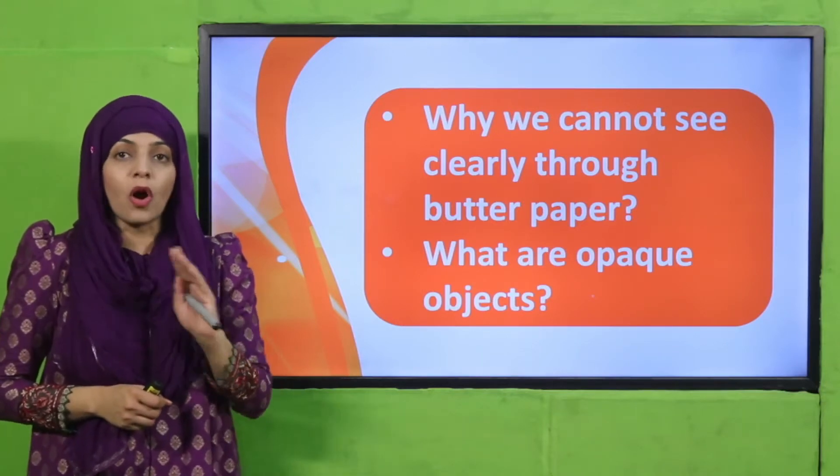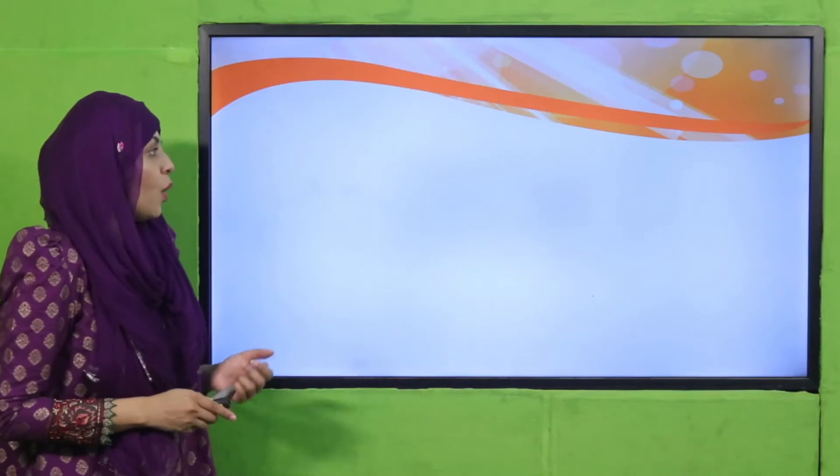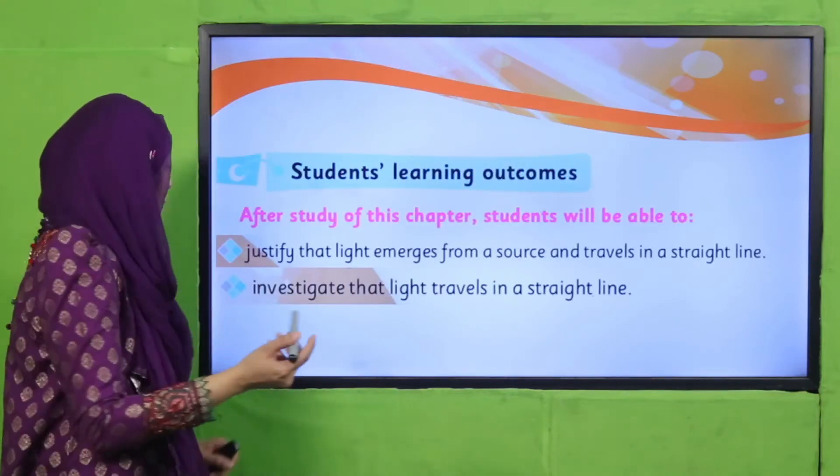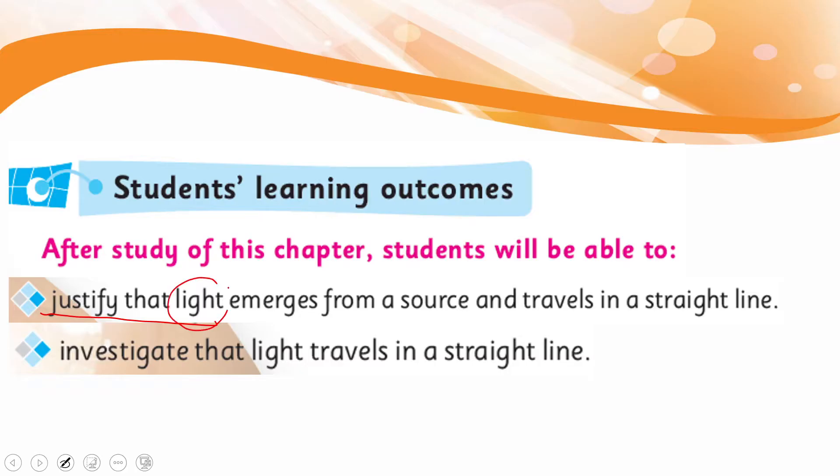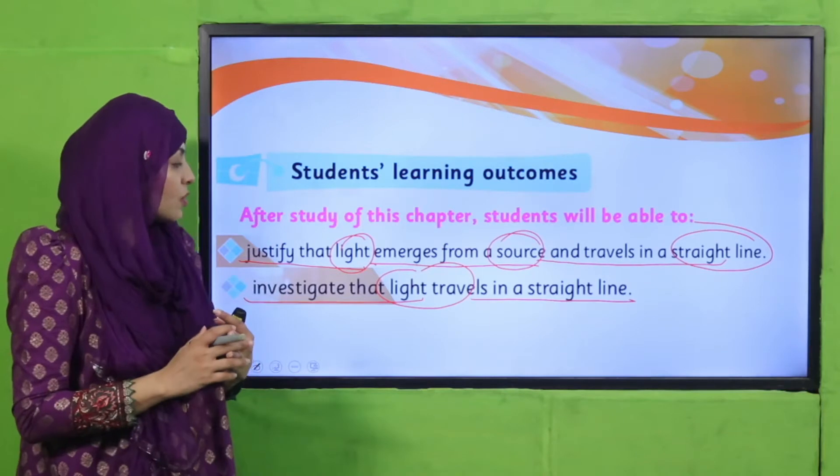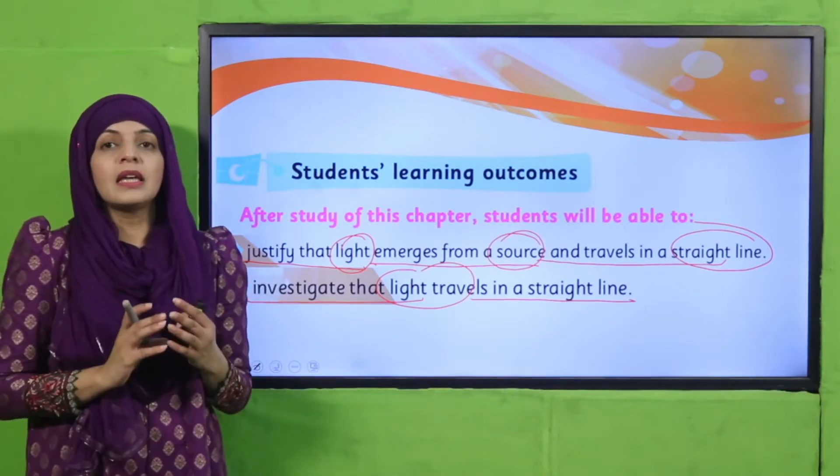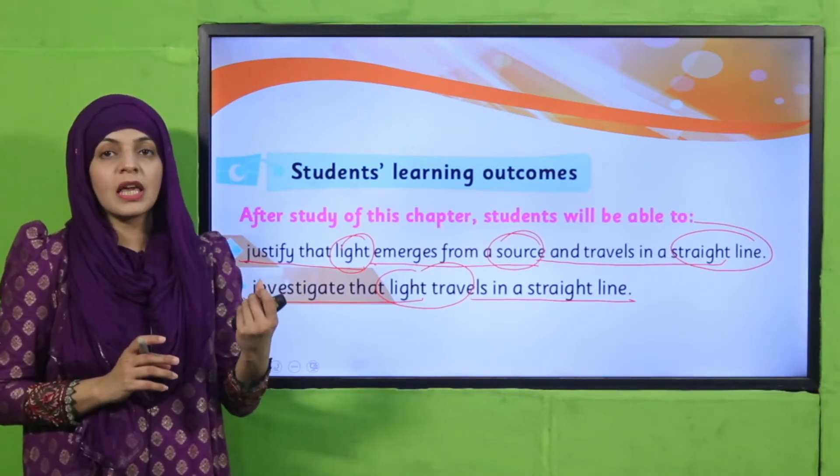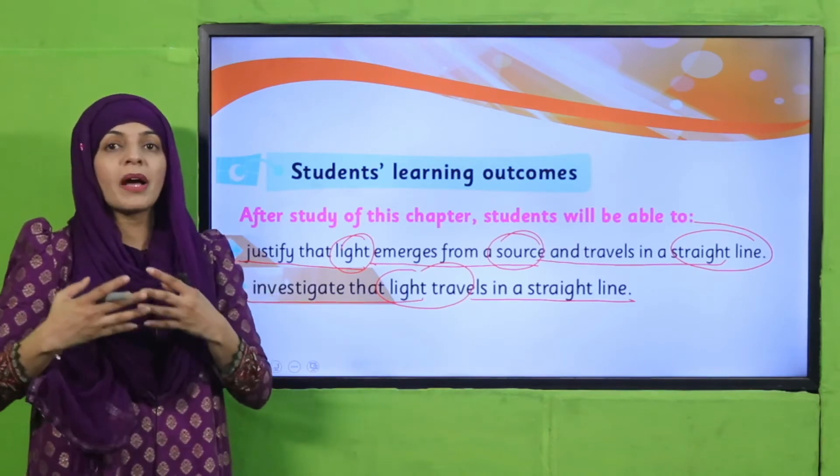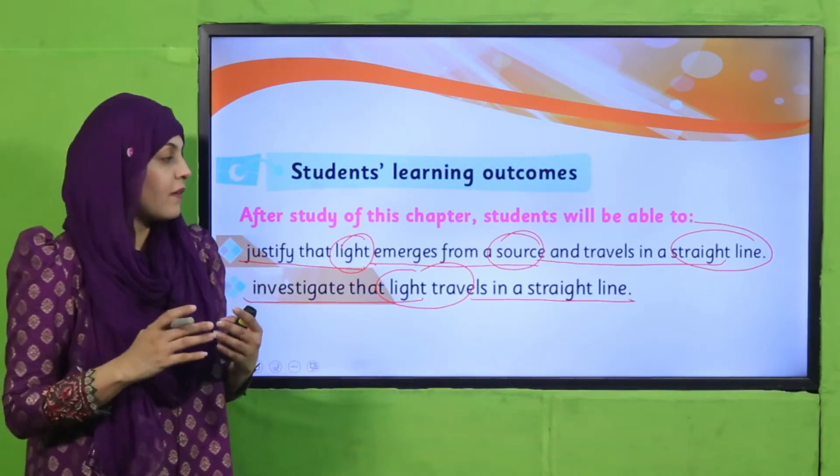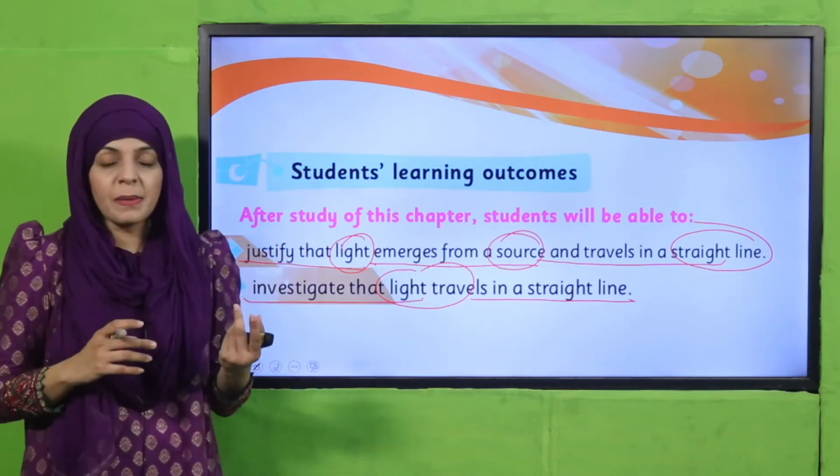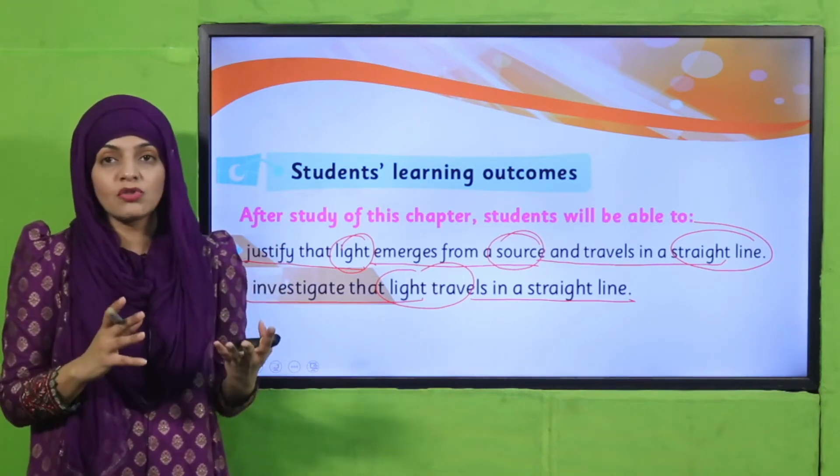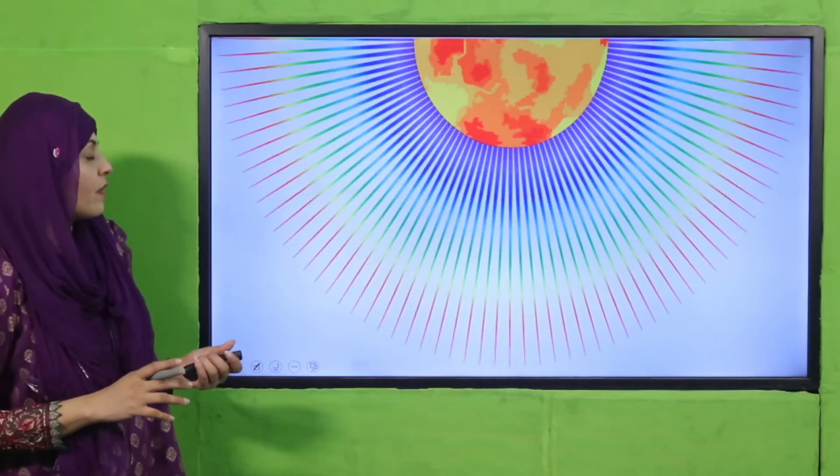In today's lecture, students will be able to justify that light emerges from a source and travels in a straight line, and investigate that light travels in a straight line. Today students will demonstrate and justify that light emerges from a source and then travels in a straight line. We will investigate through an experiment to show that light always travels in a straight line.